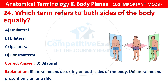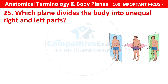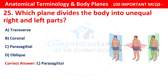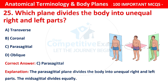Question number 25: Which plane divides the body into unequal right and left parts? Options are: transverse, coronal, parasagittal, or oblique. The correct answer is C — that is parasagittal. The parasagittal plane divides the body into unequal right and left parts. The mid-sagittal divides equally.